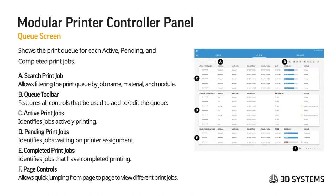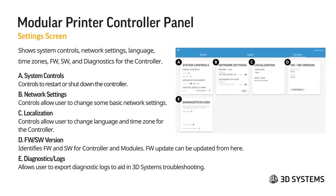The settings screen shows system controls, network settings, and more. At A are system controls where you can restart or shut down the printer. B shows network settings including your IP address and ethernet ports. C is for localization — changing language and time zones. D shows your software and firmware versions; note that the controller module has software while firmware is on each of the individual modules. There is also a diagnostics and logs tab that allows the user to export diagnostics to aid in 3D Systems troubleshooting.